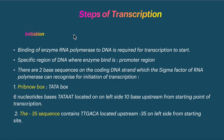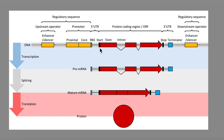The steps of transcription are: initiation, elongation, and termination. For initiation, the sigma factor is critical. The enzyme must first bind to a specific region of DNA called the promoter region. The sigma factor of RNA polymerase recognizes the promoter region to initiate transcription. There are two base sequences on the DNA that the sigma factor recognizes.